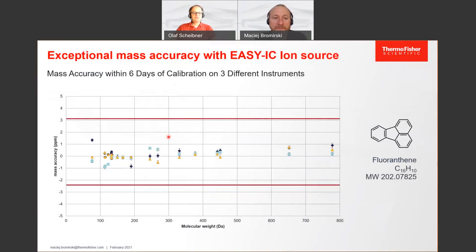If we look at how this works, here we have data from three different instruments in three different parts of the world, where we looked into the mass distribution over a six-day course. You see that no matter which mass you're looking at — we have one calibrant mass at 202, but wherever the mass you want accurate is, it doesn't matter. It works over the whole mass spectrum and over the full six days. So there is very good instrument-to-instrument reliability, and you have constant mass accuracy better than 1 ppm for a long time.